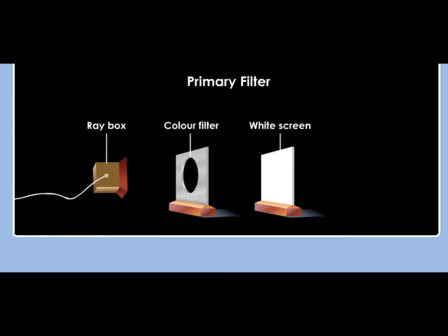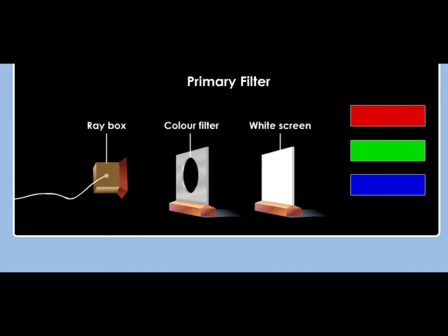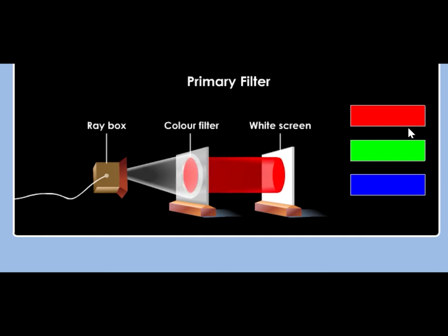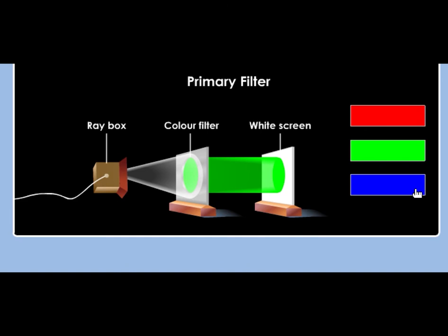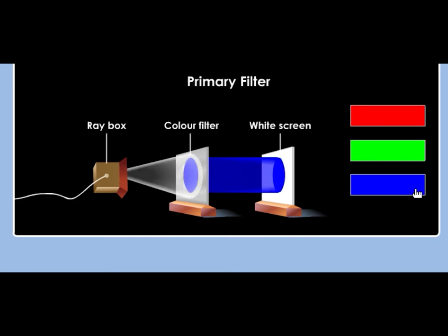Primary color filters enable only one primary color to pass through. The primary color filters are red filter, green filter, and blue filter. The red filter only allows red light to pass through it. The green filter only allows green light to pass through it. The blue filter only allows blue light to pass through it.